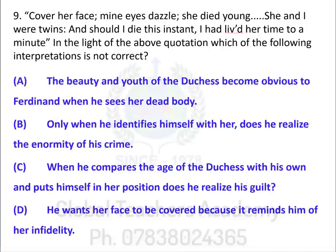The ninth question presents this quotation: 'Cover her face; mine eyes dazzle; she died young. She and I were twins; and should I die this instant, I'd lived her time to a minute.' Which of the following interpretations is not correct? Options: A. the beauty and youth of the Duchess become obvious to Ferdinand when he sees her dead body; B. only when he identifies himself with her does he realize the enormity of his crime; C. when he compares the age of the Duchess with his own and puts himself in her position, does he realize his guilt; D. he wants her face covered because it reminds him of her infidelity.